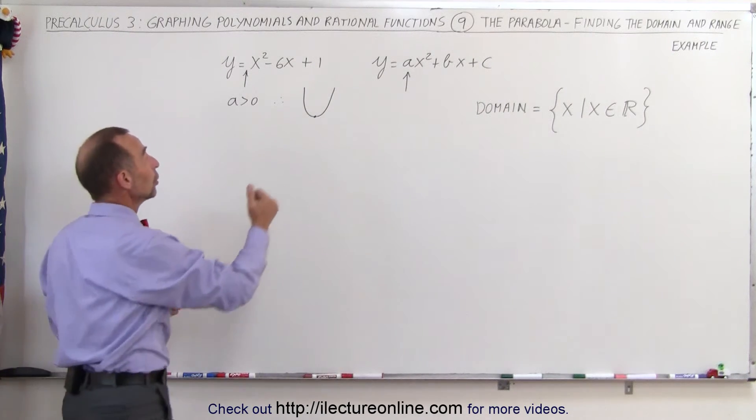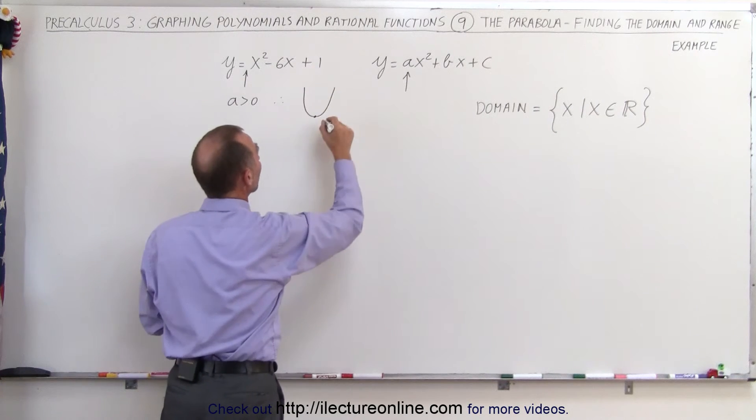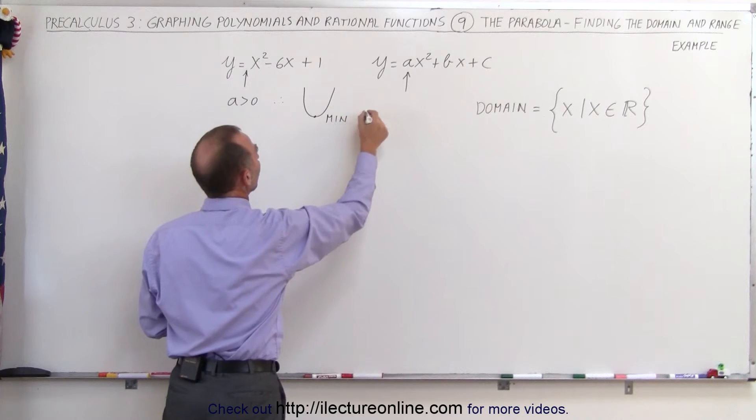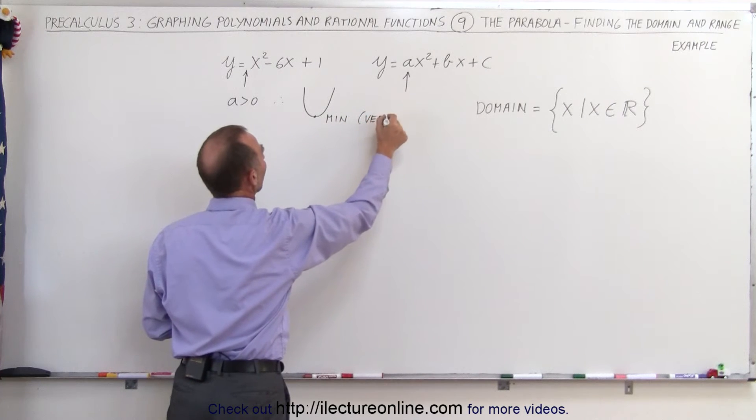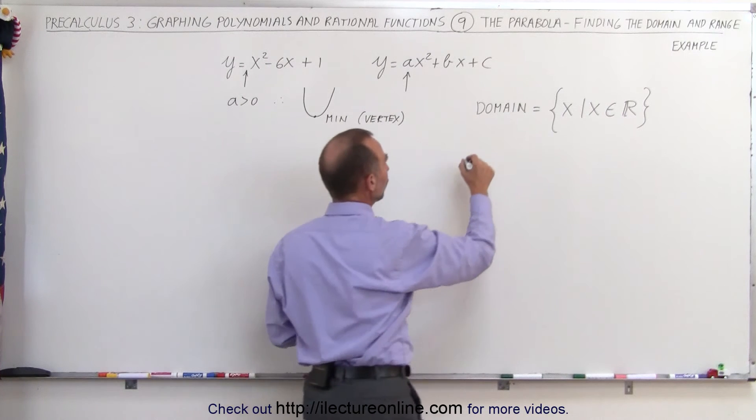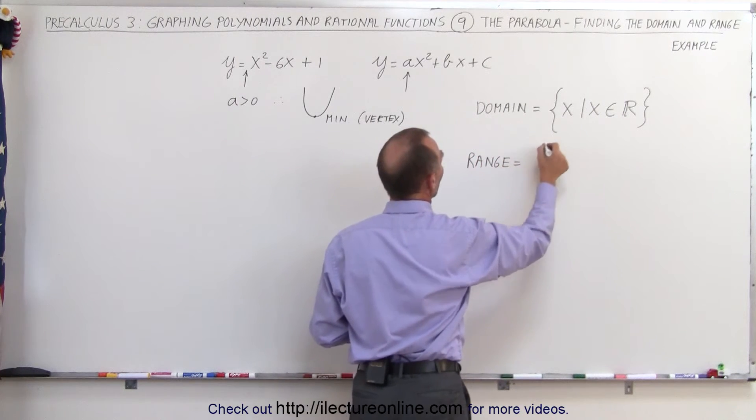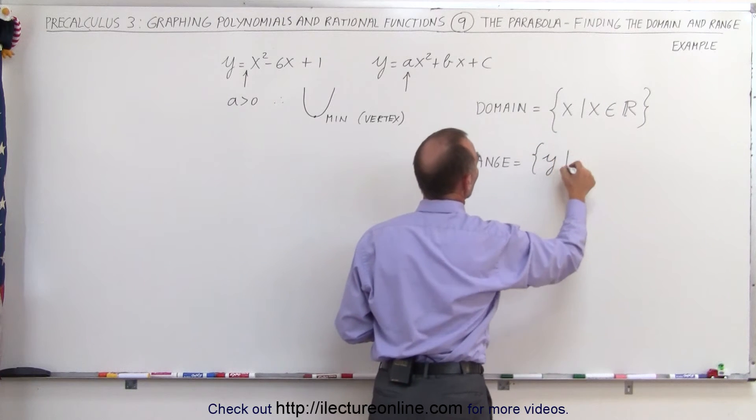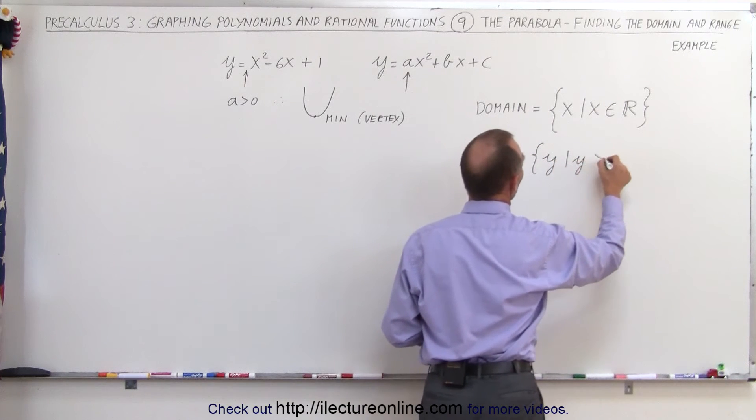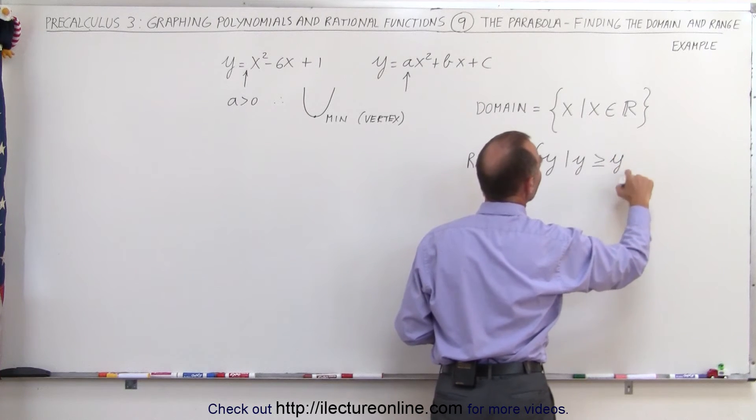What about the range? The y values must be above the minimum point, the vertex of the parabola. The range is all y values such that y is greater than or equal to the y-coordinate of the vertex.